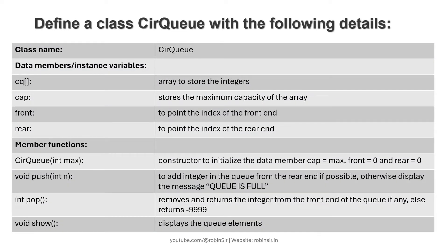These are the specifications of the class. The class name is CircularQueue. We have an array variable to store integers, a capacity variable for the maximum capacity, a front variable pointing to the index of the front end, and a rear variable pointing to the index of the rear end. The constructor initializes the data members: capacity is initialized with max, and front and rear are initialized to 0. We have a push function to insert an element if possible, otherwise it displays 'queue is full'; a pop function that returns the deleted element or minus 9999 if empty; and a void show function to display all current queue elements.